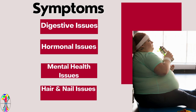An individual who has Hashimoto's thyroid disease can have a lot of different symptoms. Examples of those symptoms include digestive issues such as constipation, bloating, and gas issues related to motility or movement of the digestive tract. They could also have hormonal issues leading to abnormal period patterns — too heavy or too light periods. They can also have metabolic issues such as slow metabolic activity and weight gain, as well as mental health issues such as depression, irritability, and confusion.